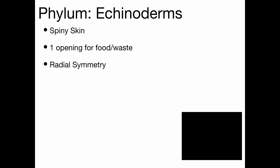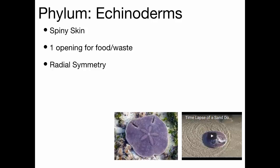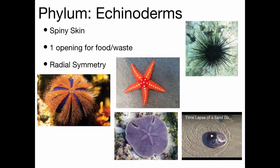The next group are called echinoderms. The name itself — like a dermatologist is a doctor that helps with skin — 'derm' means skin, and 'echino' means spiny, so their name means spiny skin. These have spines or a hard exoskeleton. Examples are sand dollar, starfish, and sea urchin. Some echinoderms are filter feeders — they take in water and filter little bits of food out, like the sand dollar. Sea urchins have all those spikes on them for protection.